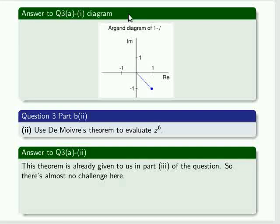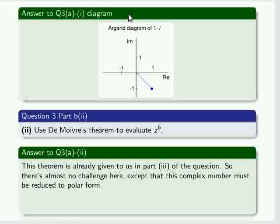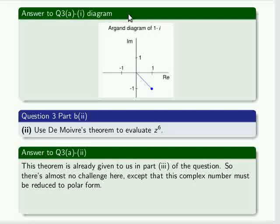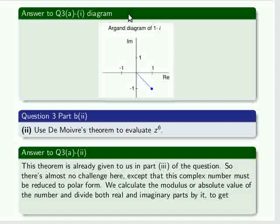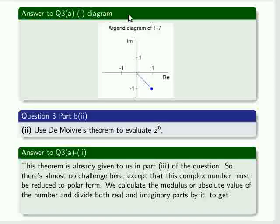It's given to us already. There's almost no challenge here in remembering that, except that this complex number must be reduced to polar form. We don't have it in polar form yet. We calculate the modulus or absolute value of the number and divide both real and imaginary parts by it